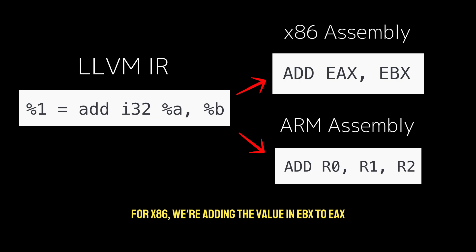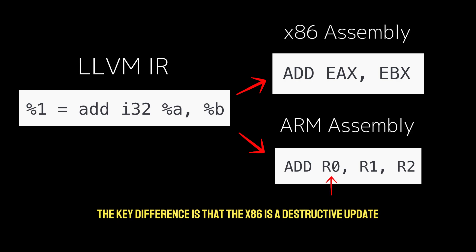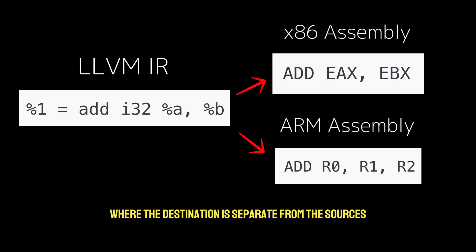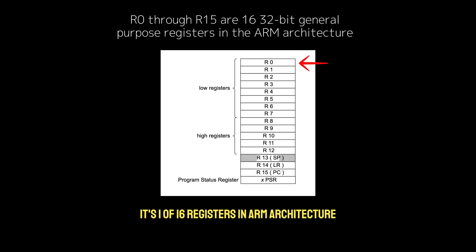For x86, we're adding the value in EBX to EAX and storing the result back in EAX. For ARM, we're adding R1 and R2 and storing the result in R0. The key difference is that x86 performs a destructive update — the destination is also a source — whereas ARM performs a non-destructive update where the destination R0 is separate from the sources. R0 is one of 16 general-purpose registers in ARM architecture, from R0 to R15.